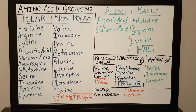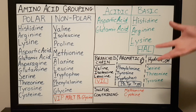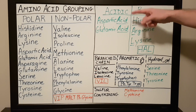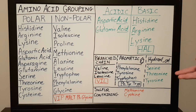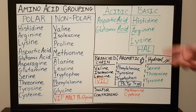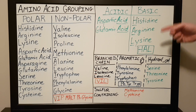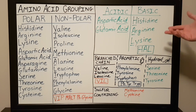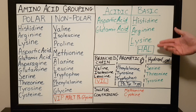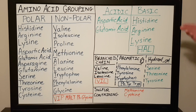Other grouping systems include whether amino acids are acidic or basic. For the acidic amino acids it's very simple — it's just the amino acids that have 'acid' in their name: aspartic acid and glutamic acid. For basic amino acids it's histidine, arginine, and lysine — remember by the mnemonic HAL. HAL is basic: histidine, arginine, and lysine.